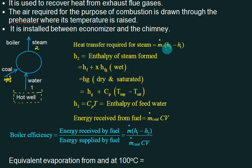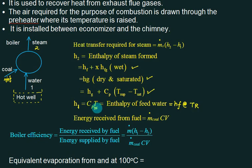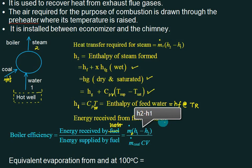H2 you can calculate as wet, dry saturated, or superheated. H1 equals either HF at room temperature or you can calculate using CP of water (4.2) and CP of vapor (2.1). Boiler efficiency is defined as the amount of energy received by the water divided by the amount of energy supplied by the fuel: [m_s × (H2 − H1)] / [m_f × Calorific Value].